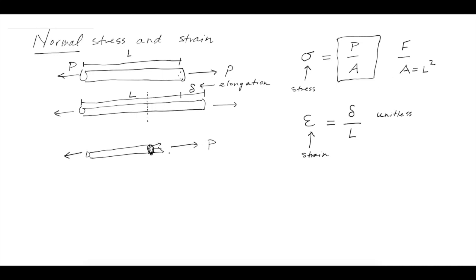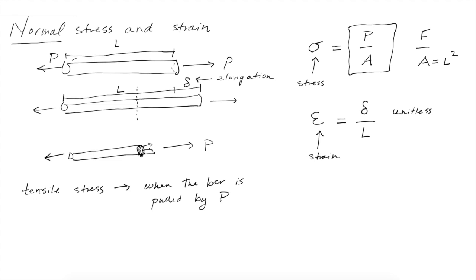Just a little vocabulary: we call this tensile stress. Tensile stress is the stress that develops when the bar is pulled by P — this is the concept of tension, and so these are called tensile stresses. The other example, of course, would be compressive stress — that's just the opposite idea, where the bar is now being pushed in by a force acting in the other direction.